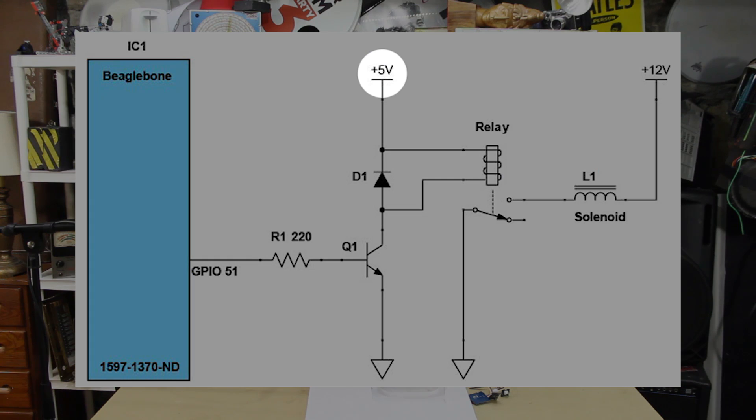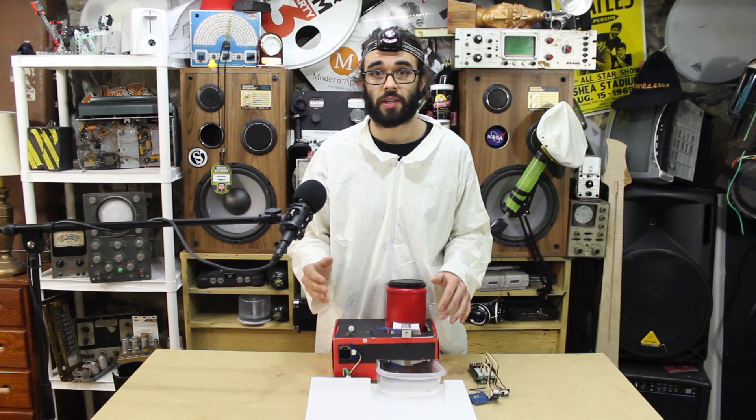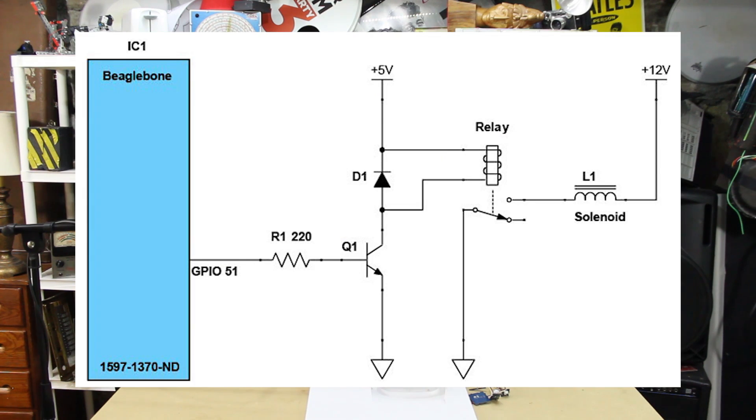The BeagleBone's 5-volt power supply is used to supply current to the relay coil. The solenoid is powered by a separate 12-volt power supply. We will want to use the common and normally open pins so that when the transistor turns on, the relay switches from open to closed and thus powering the solenoid.